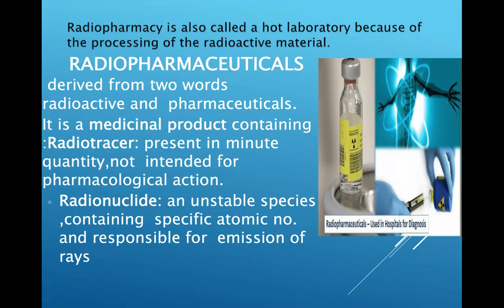A radionuclide is an atom that has excess nuclear energy, making it unstable. It is an unstable species containing a specific atomic number and is responsible for the emission of rays. A radiopharmaceutical comes in different dose forms — it is a different drug compared to other ordinary pharmaceuticals. It carries the symbol of radioactivity and a white or yellow color label with all relevant descriptions. It is a combination of a radioactive material and a pharmaceutical.